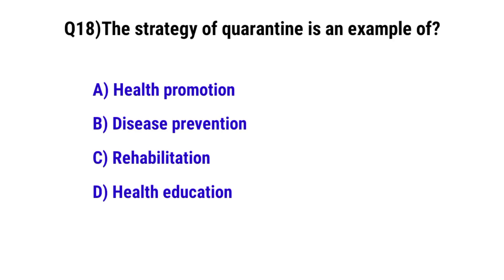Question number 17. The strategy of quarantine is an example of? The correct option is B: Disease prevention.